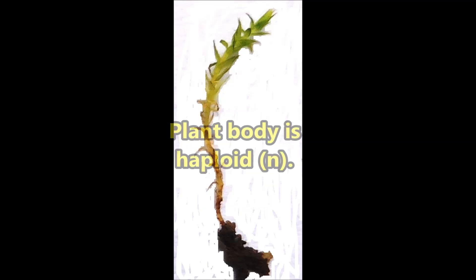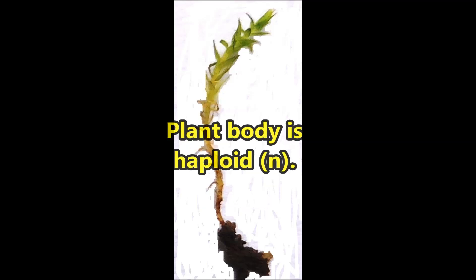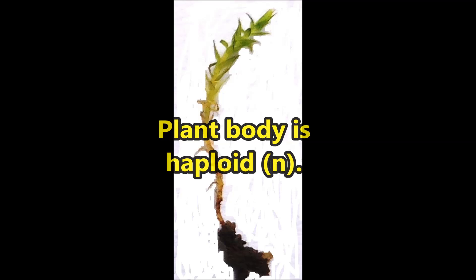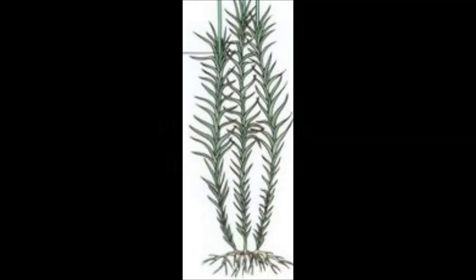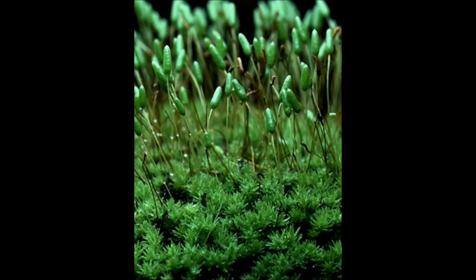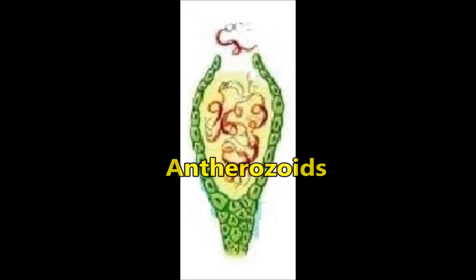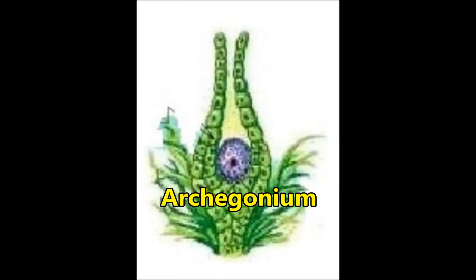Sex Organs: The main plant body of the bryophyte is haploid. It produces gametes, hence it is called a gametophyte. The sex organs in bryophytes are multicellular. The male sex organ is called antheridium, which produces antherozoids. The female sex organ is called archegonium, which produces the egg.